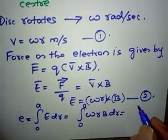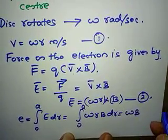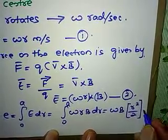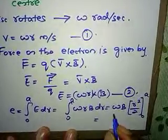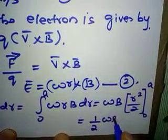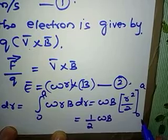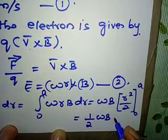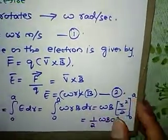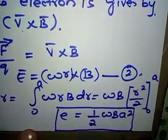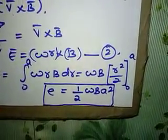The integration gives omega B times r²/2, evaluated over the limits 0 to a. Applying the limits: upper limit a and lower limit 0, we get 1/2 · omega · B · a². So the equation for the EMF E is given by E = (1/2) · omega · B · a². This is the equation for the EMF for the Faraday's disk generator.